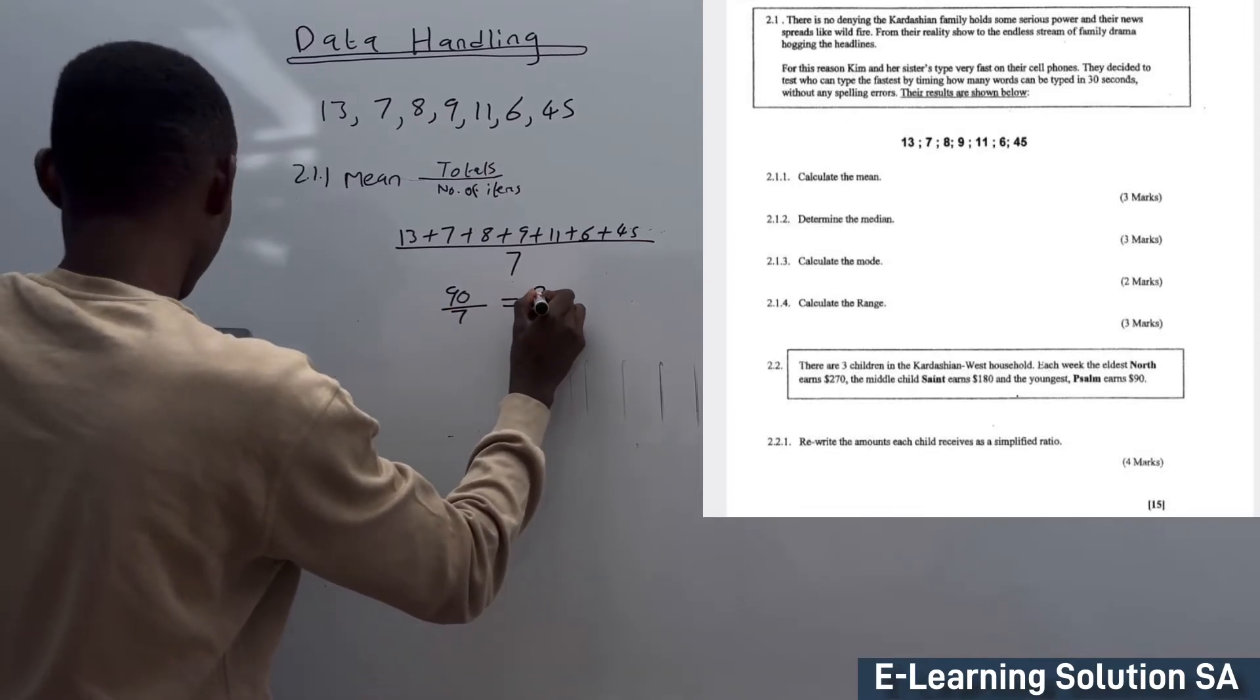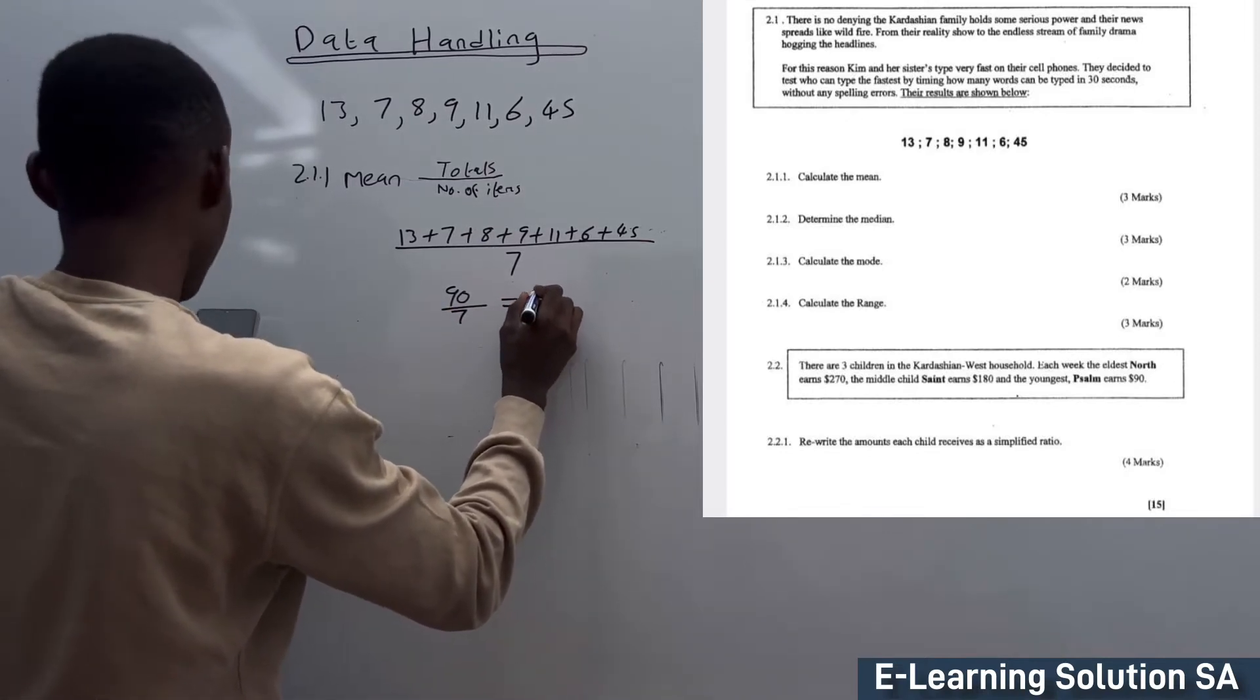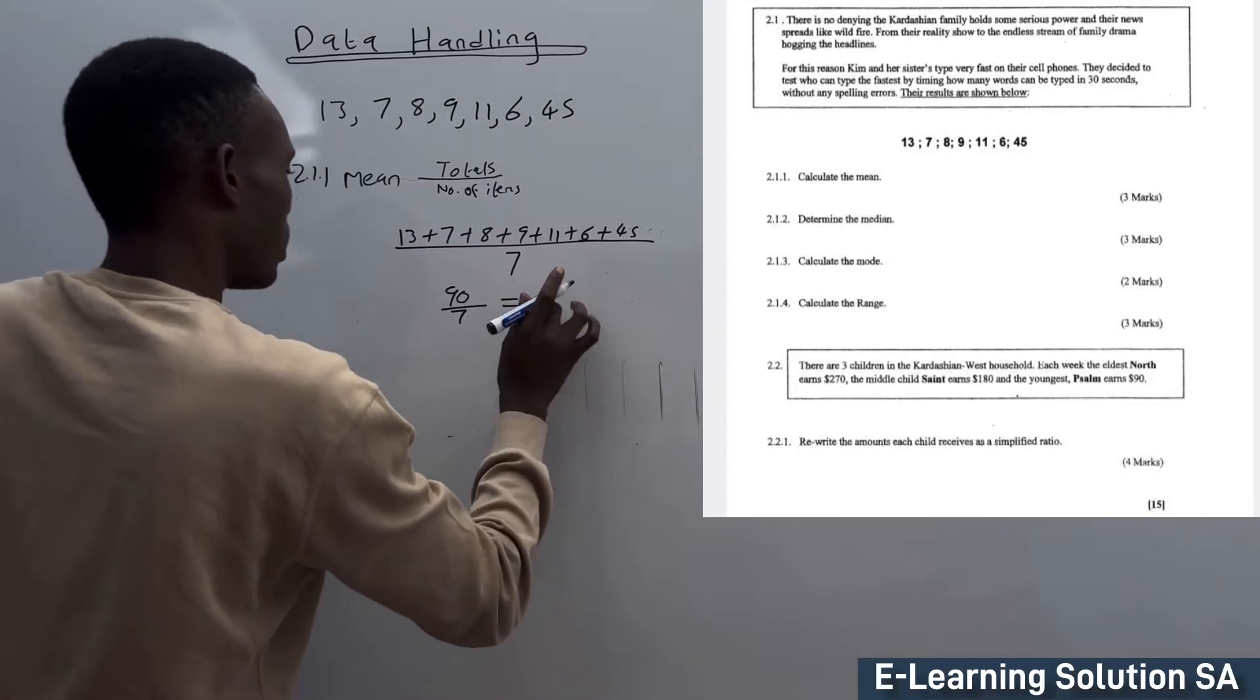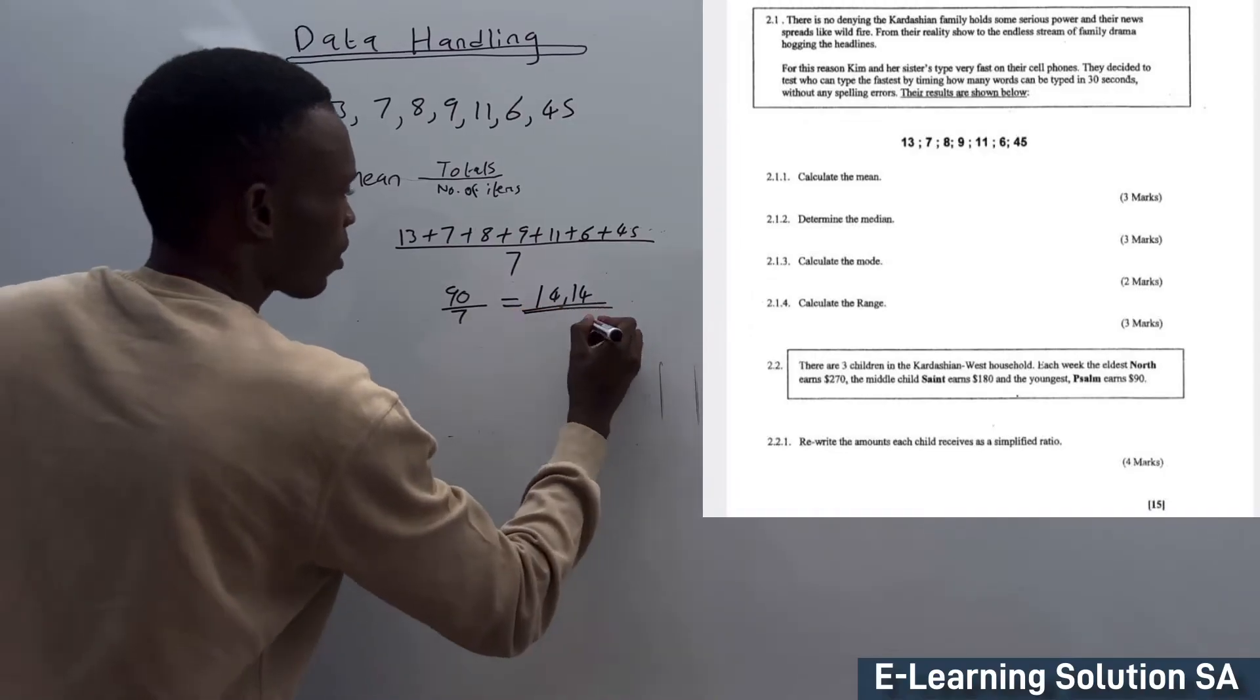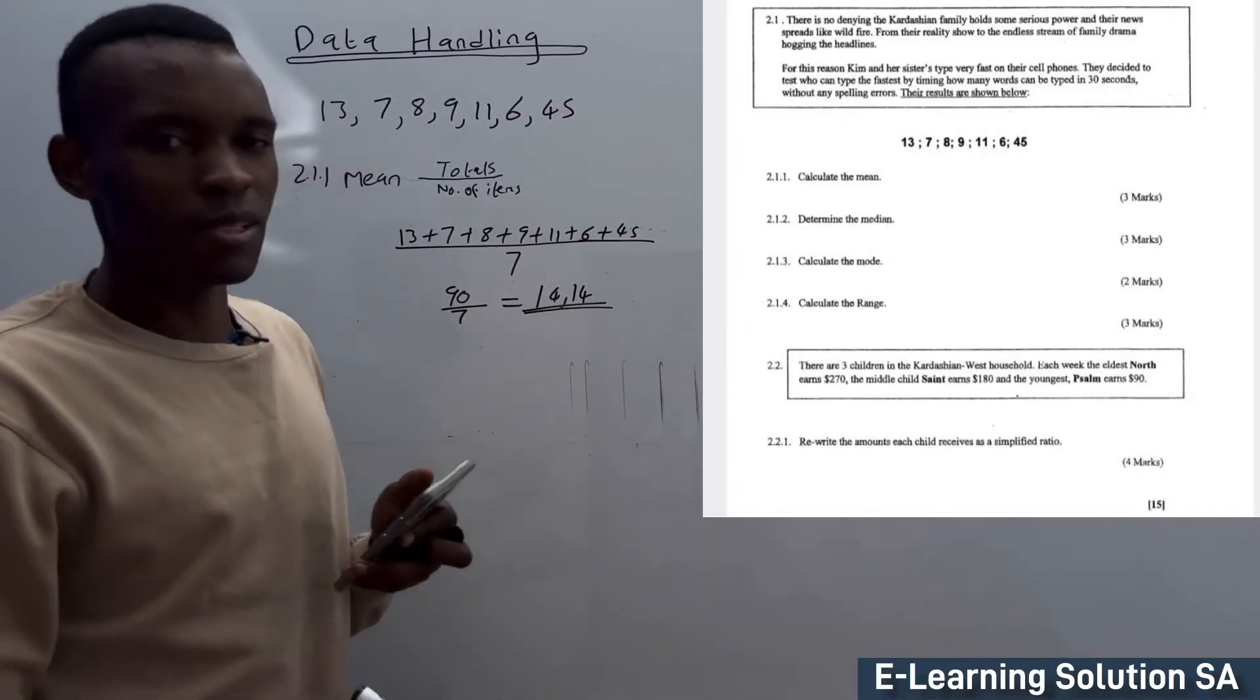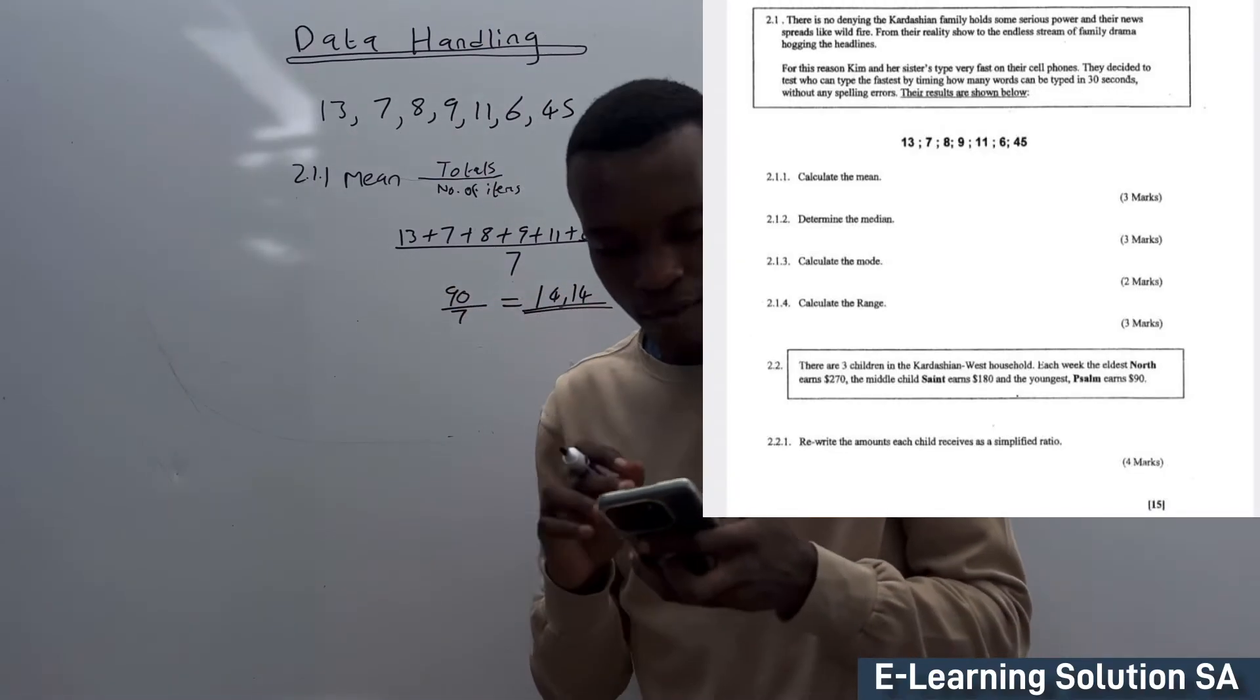It's going to give you a mean of 14.14. This is our answer. Mean simply means that you need to calculate an average.